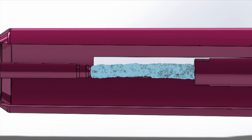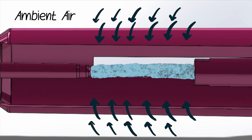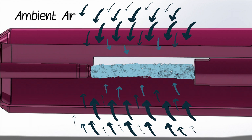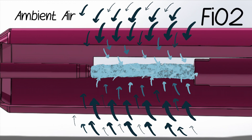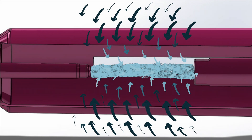The low pressure jet pulls ambient air into the blender through holes on its side, just like the paper sheets are pulled together when air is blown between them. As ambient air enters the blender it mixes with the oxygen jet. The amount of ambient air pulled in determines the FiO2 concentration. This air mixture is then captured at the exit of the blender and delivered to the patient.